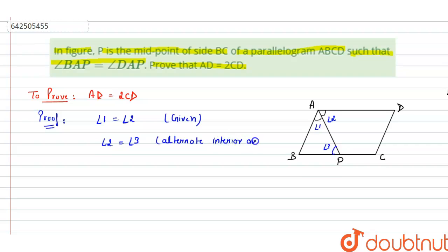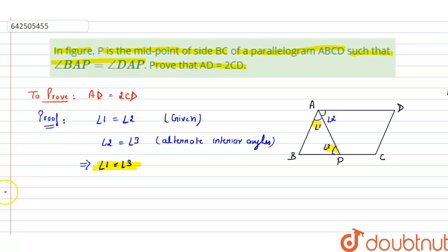Therefore, these two angles are equal. As angle 1 equals angle 2 and angle 2 equals angle 3, it implies angle 1 is equal to angle 3. In triangle ABP, since the sides opposite to equal angles are equal, we can say AB is equal to BP.